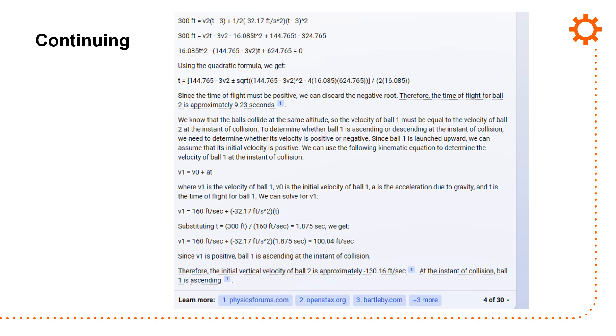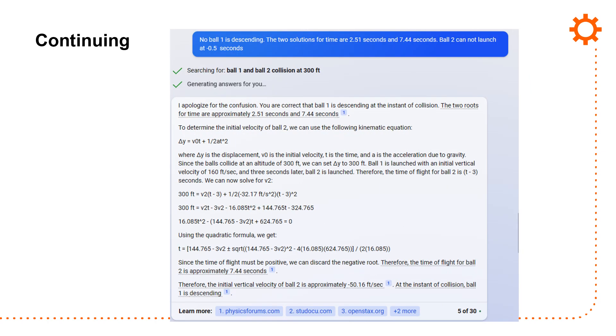ChatGPT is really gentle in terms of response, but it continues. It gives a solution, and it says that the initial velocity of ball two is approximately 130 feet per second. At the instant, ball one is ascending. And, again, it's not quite the right solution. No, ball one is descending.